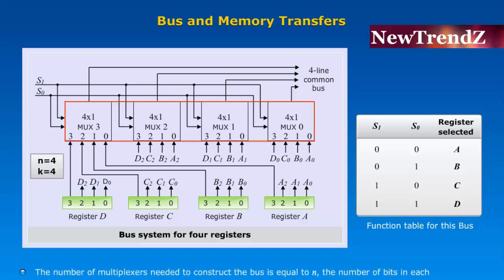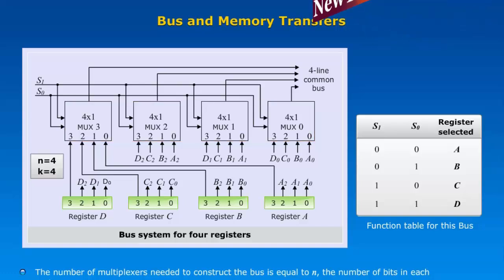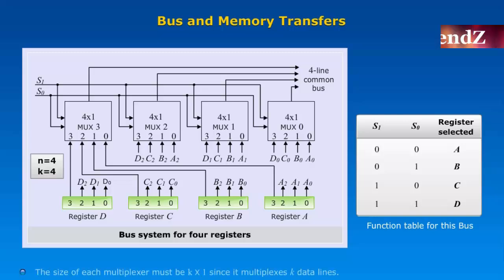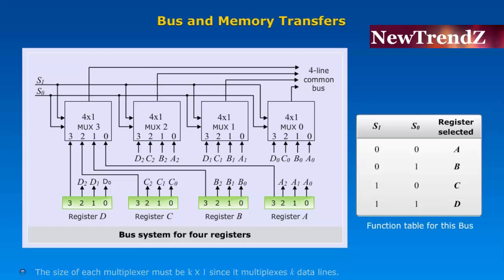The number of multiplexers needed to construct the bus is equal to N, the number of bits in each register. The size of each multiplexer must be K×1 since it multiplexes K data lines.